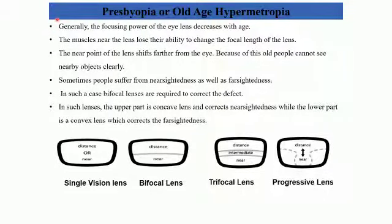The next type of disorder we are studying is presbyopia, or old age hypermetropia. Presbyopia is the same as hypermetropia but comes with age. As a person's age increases, the power of accommodation decreases, meaning the person cannot bring about a change in focal length. This is due to weakening ciliary muscles, which cannot relax and contract sufficiently.